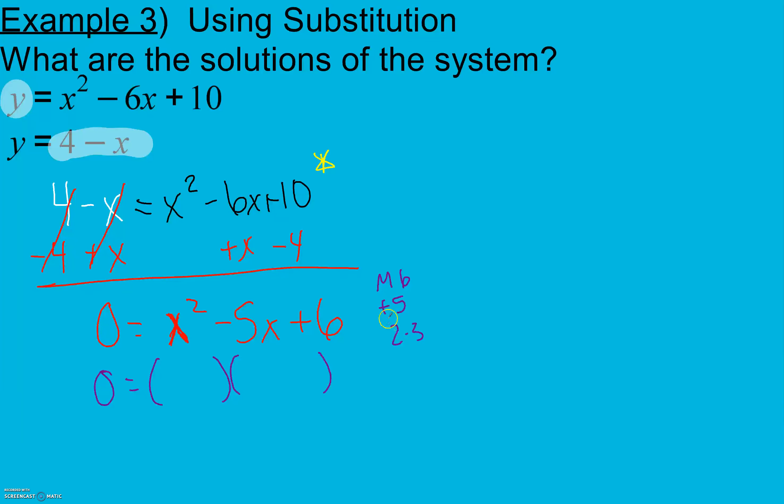Because I added and found this sum, my signs are going to be the same, both negative. Multiply to x squared is x and x. And again, we're going to use 2 and 3 here.